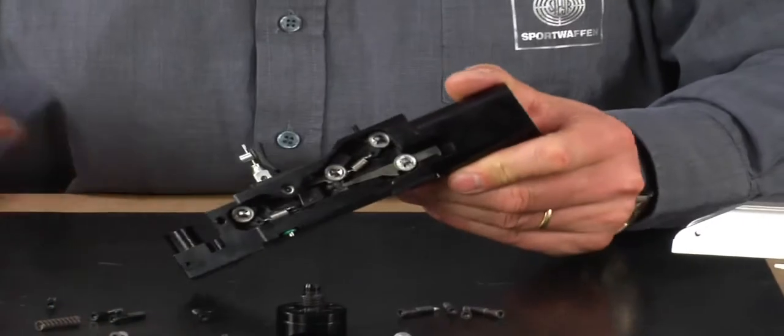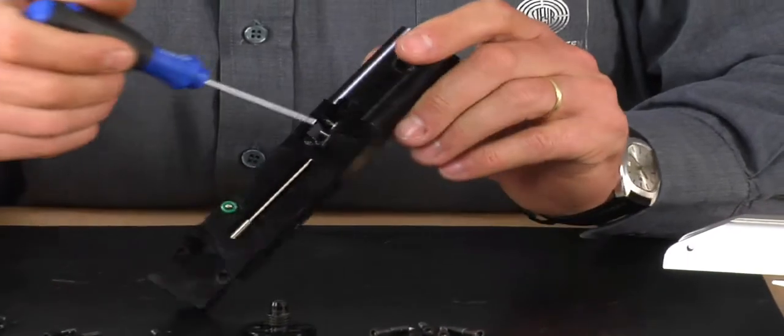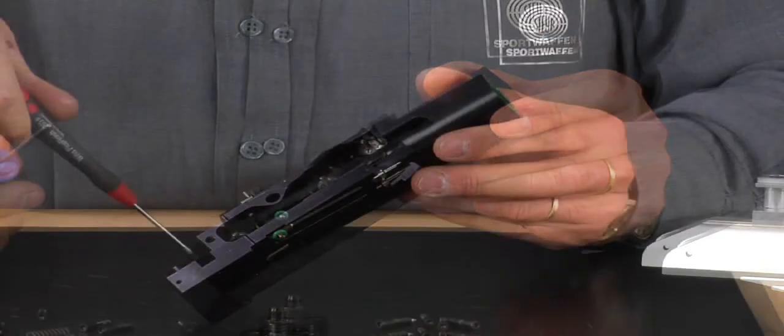Removing the striker. Now you remove the striker by slightly opening the 1.5mm screw in the back area.